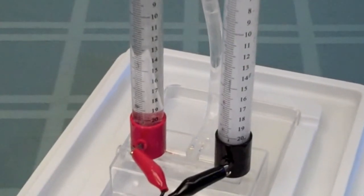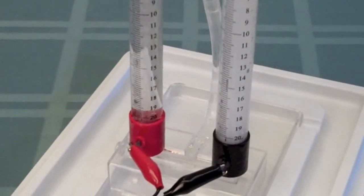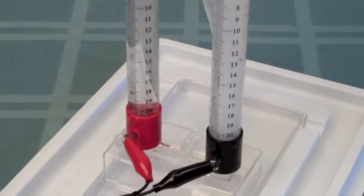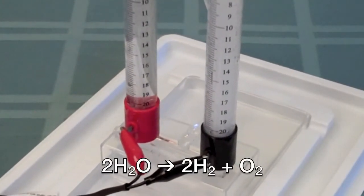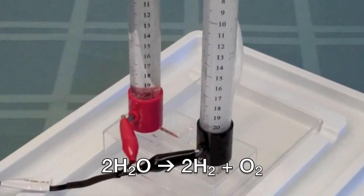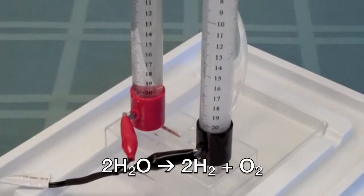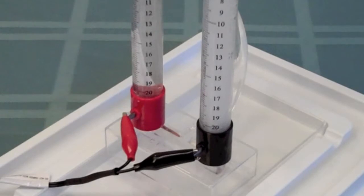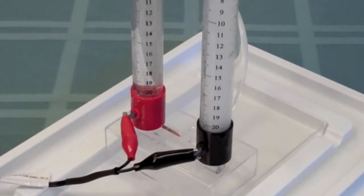First, we can observe that the black storage column has more bubbles being produced than the red column. Since we are decomposing water into hydrogen and oxygen, we know that there must be two hydrogen molecules for every one oxygen molecule. So, more bubbles in the black storage column must mean more gas, which indicates that it's hydrogen.